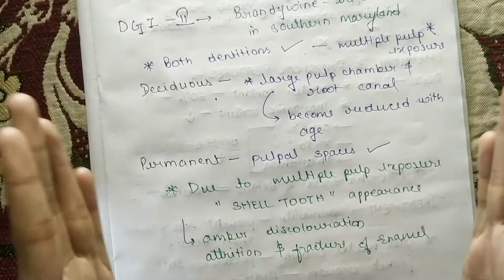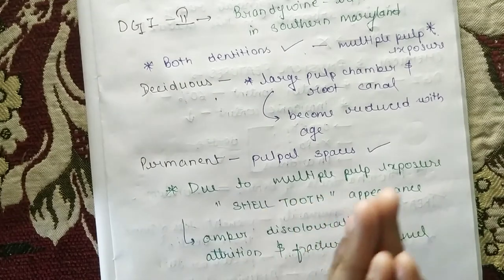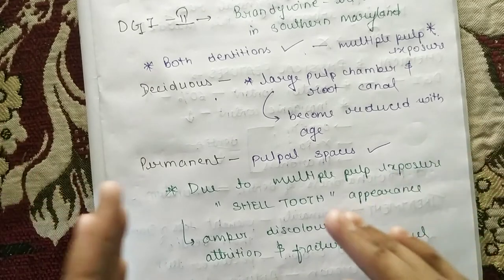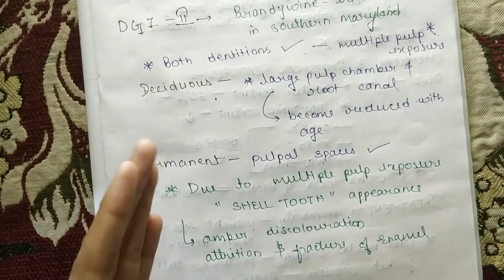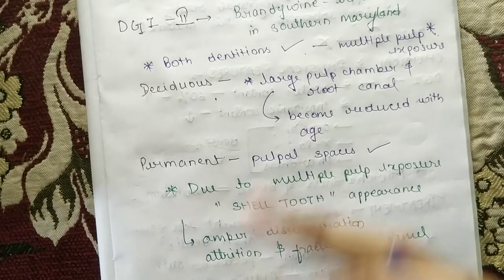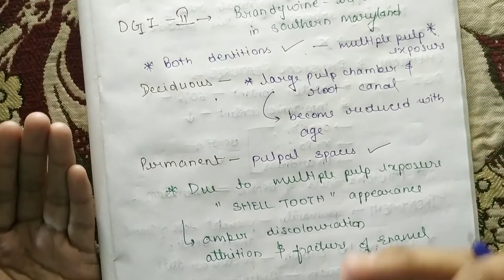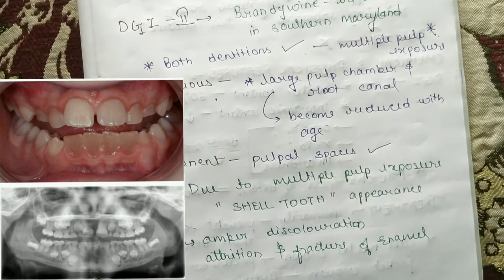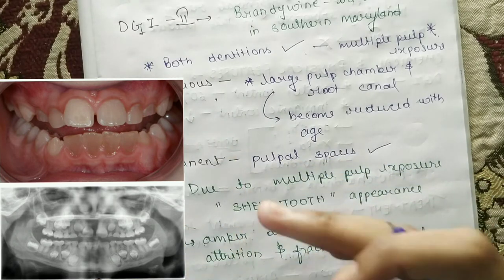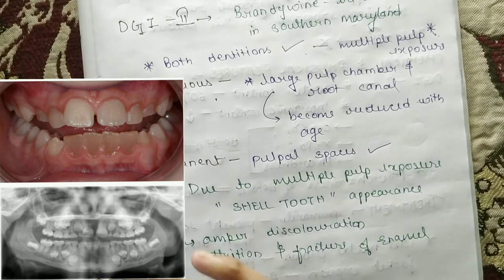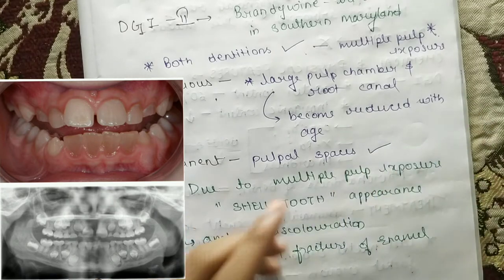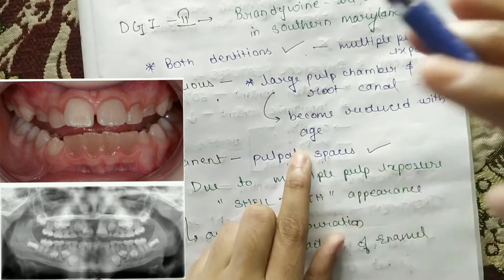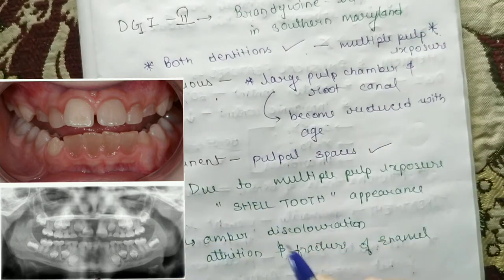In deciduous teeth, there is a large pulp chamber and root canal. In dentinogenesis imperfecta, the pulp chamber becomes very small over time. At the time of birth and a few years after, the pulp chamber may be large, but 2-3 or 4 years later, with age, the pulp chamber and root canal will reduce progressively.